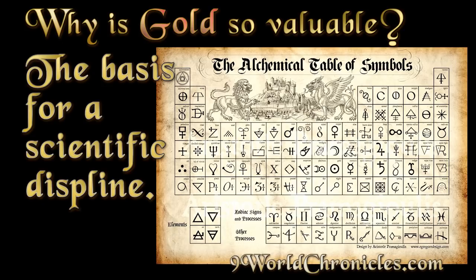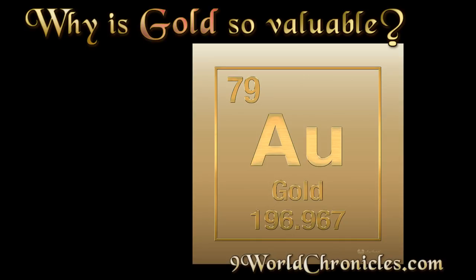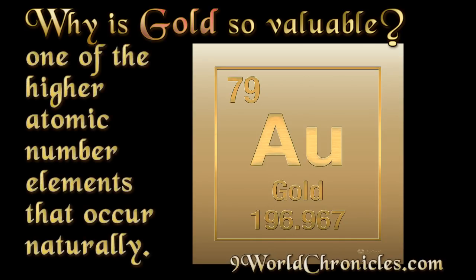Gold is a chemical element with the symbol AU, from the Latin word Aurum, and the atomic number 79, making it one of the highest atomic number elements that occurs naturally.